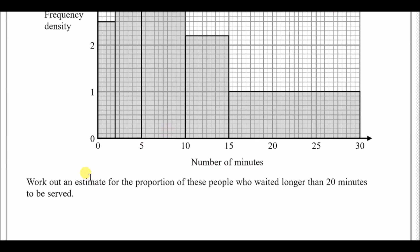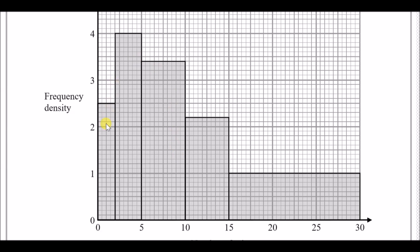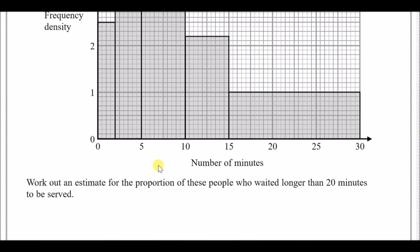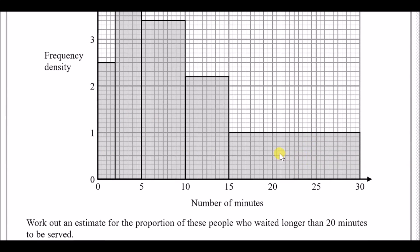It wants us to work out an estimate for the proportion of these people who waited longer than 20 minutes to be served. Notice the word 'proportion' not 'number,' so our answer needs to be a decimal, fraction, or percentage. The easiest approach is to work out the area of every single block.